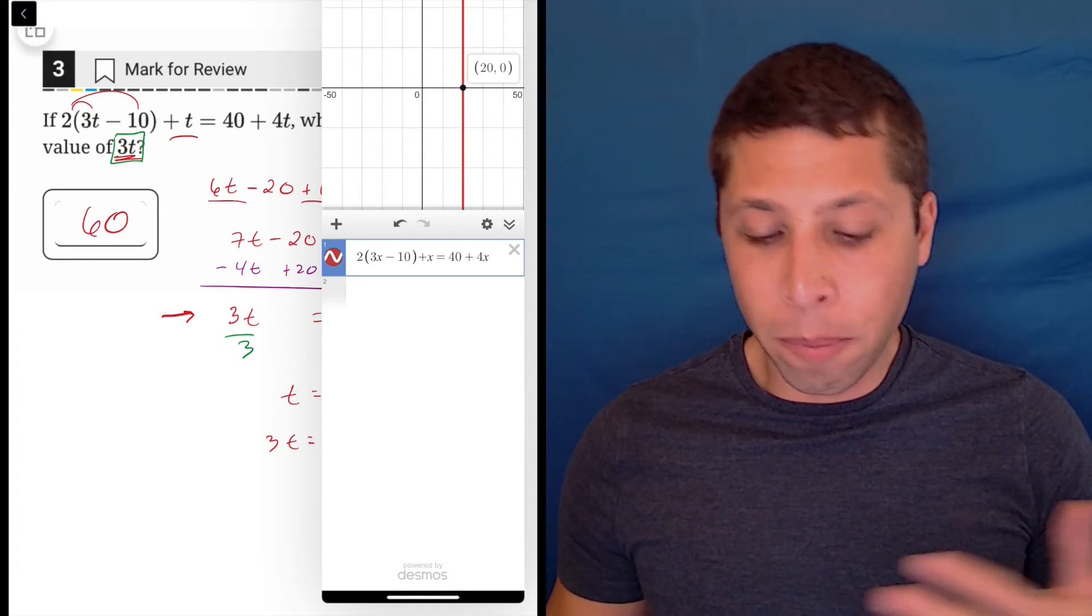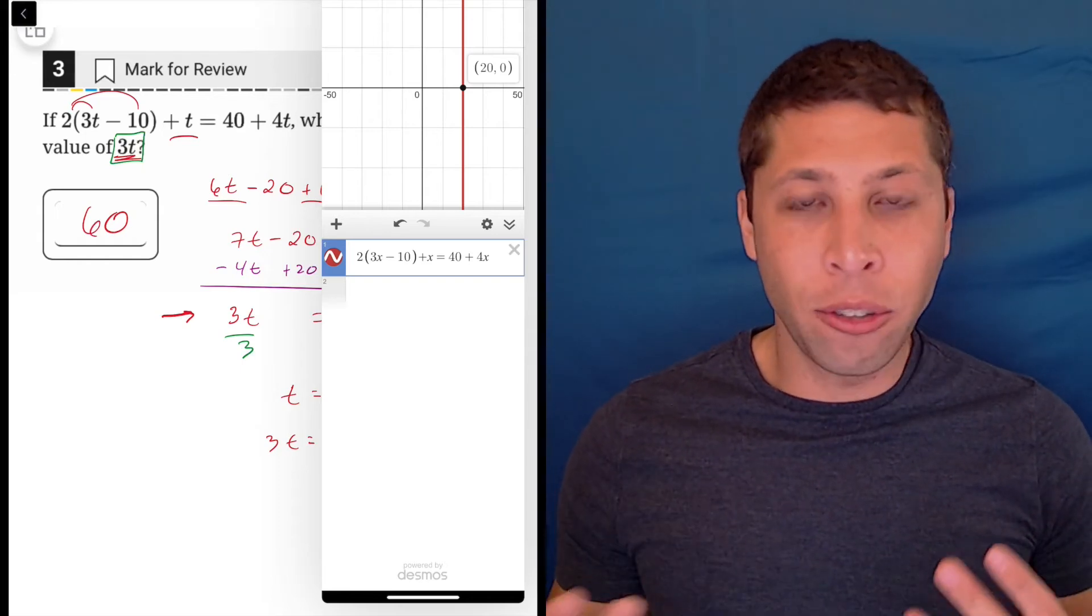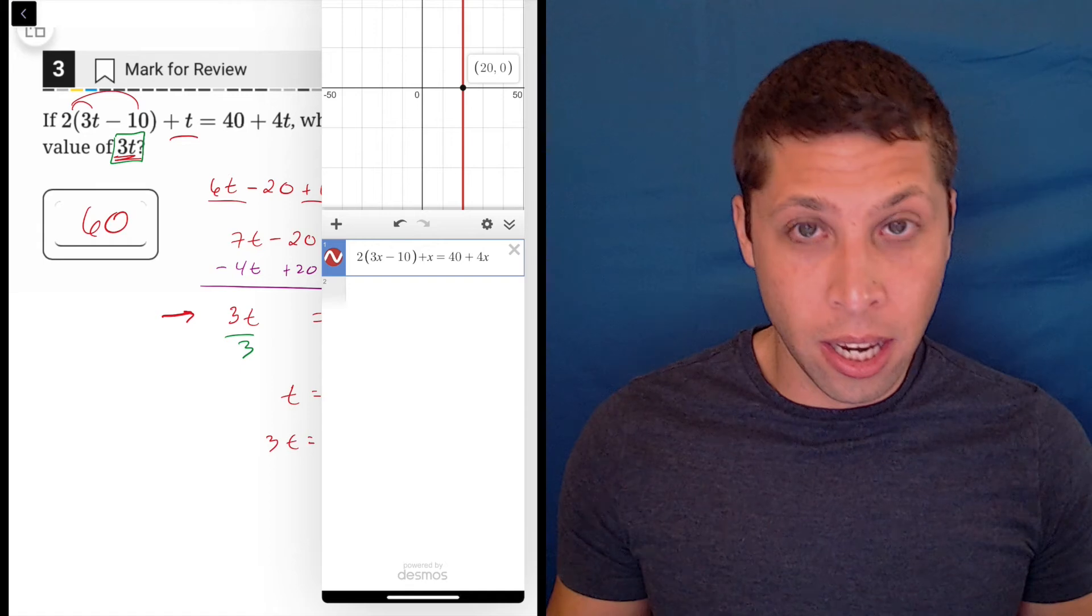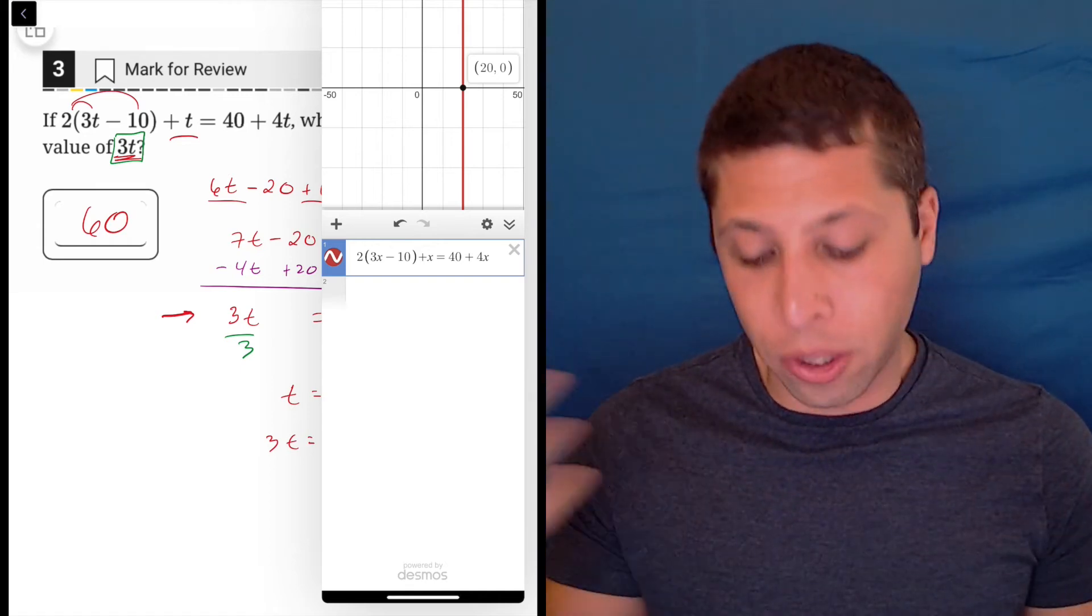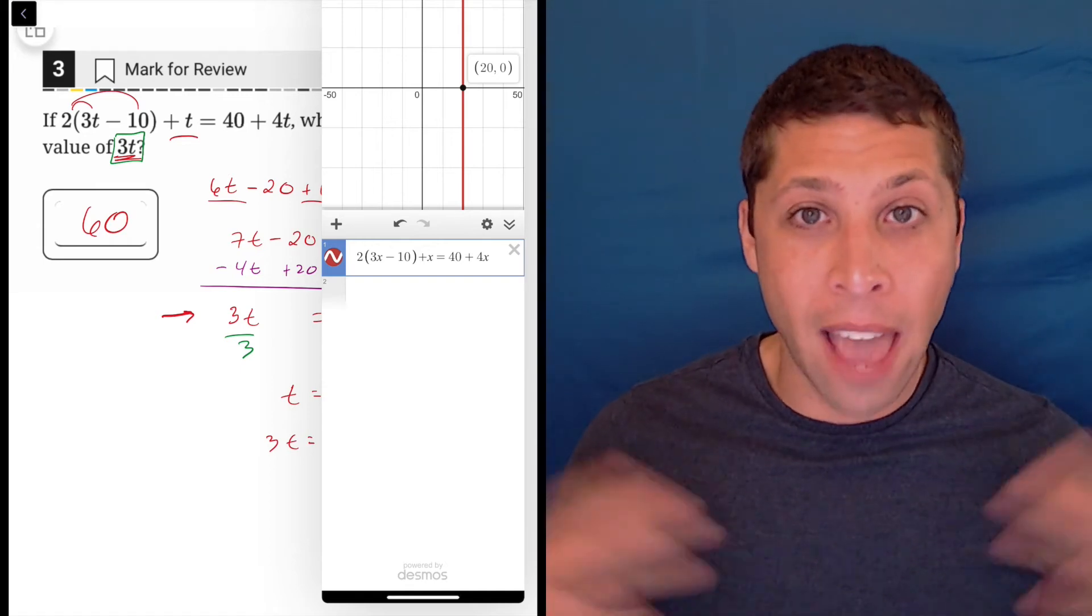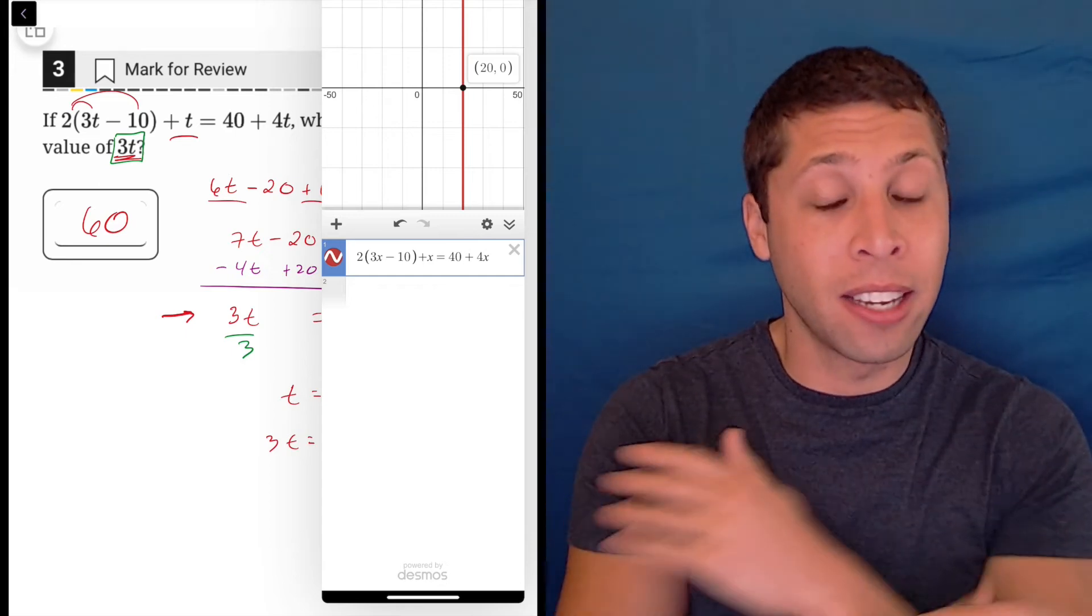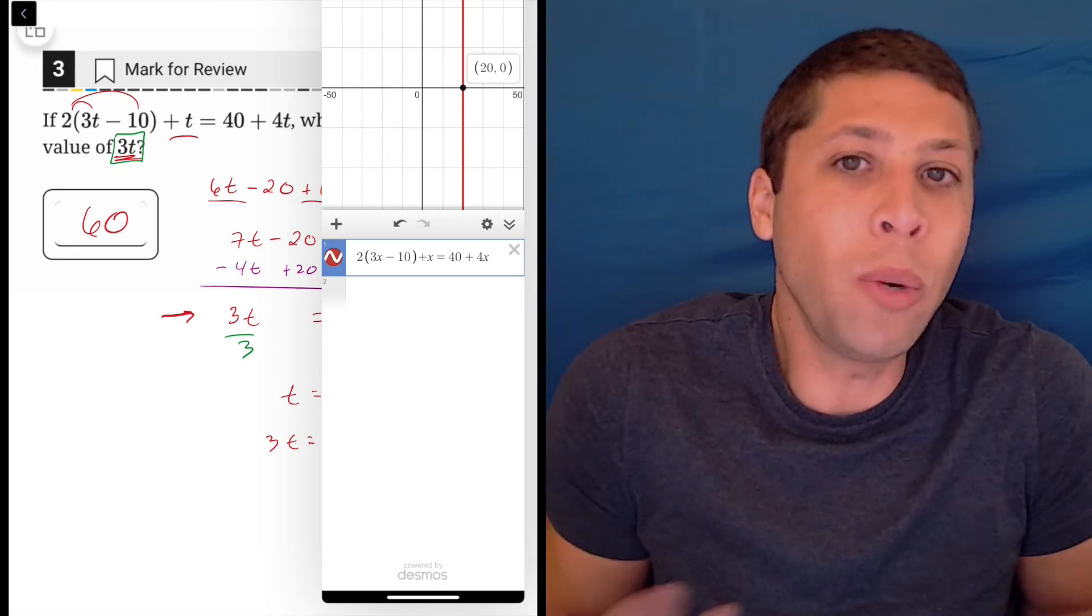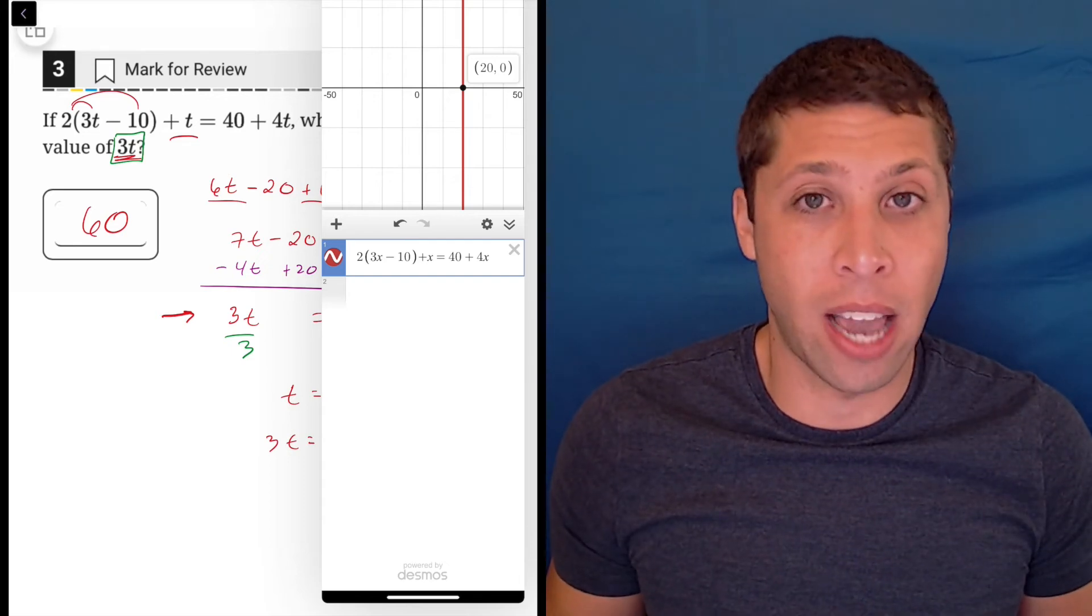You could put this in in different ways. You could put it in as two separate equations like y equals 40 plus 4t. And then another y equals 2 times 3t minus 10 plus t. And then you can see where those two things intersect. But if we get comfortable with what this is giving us, we can do a lot of algebra just using the graphing calculator.